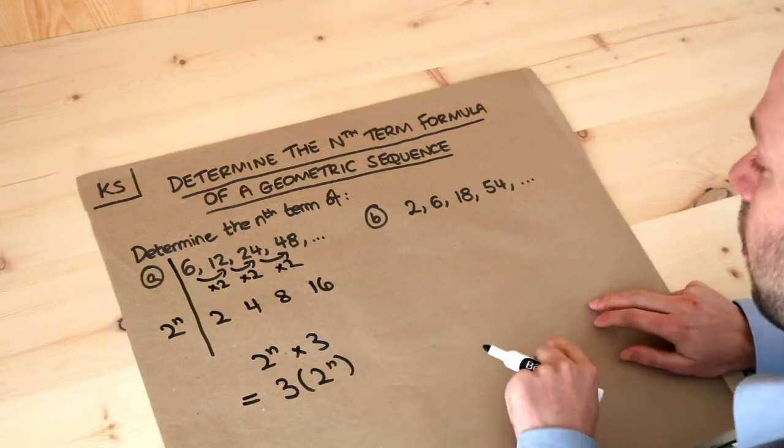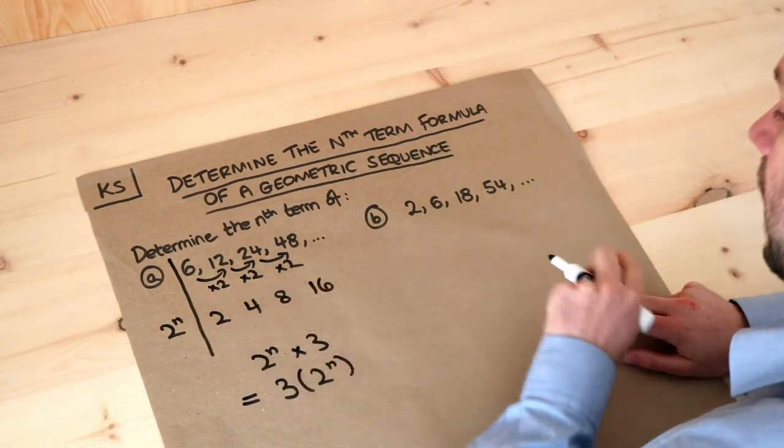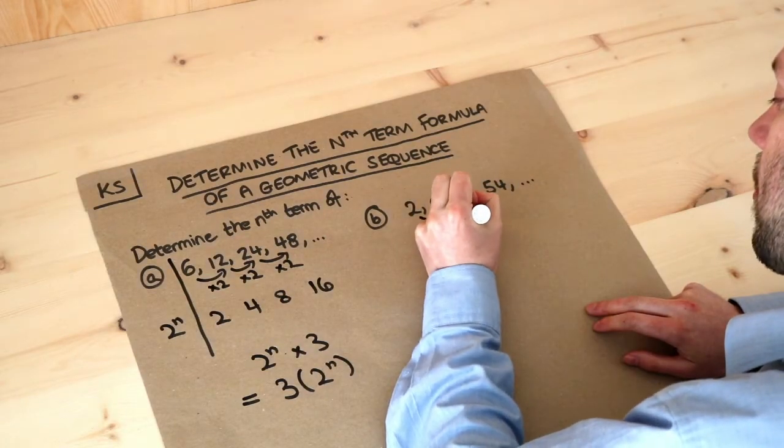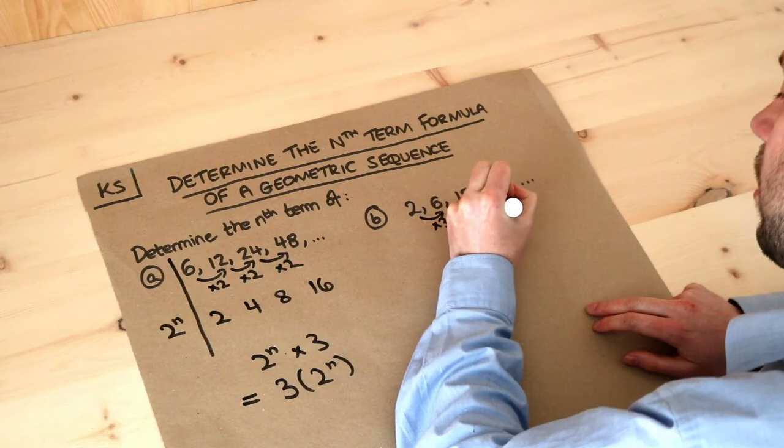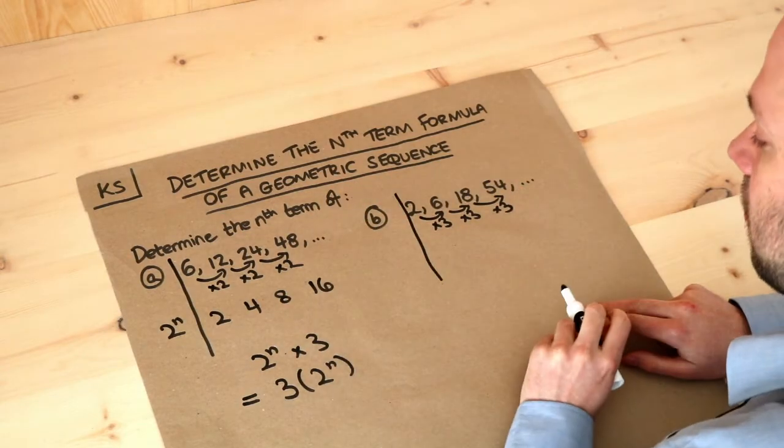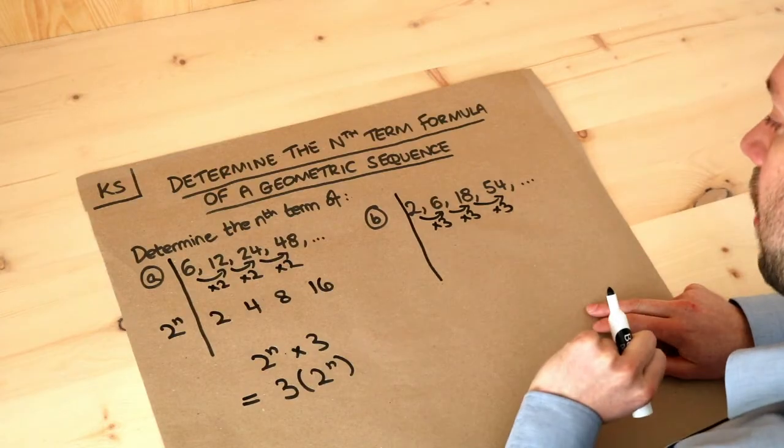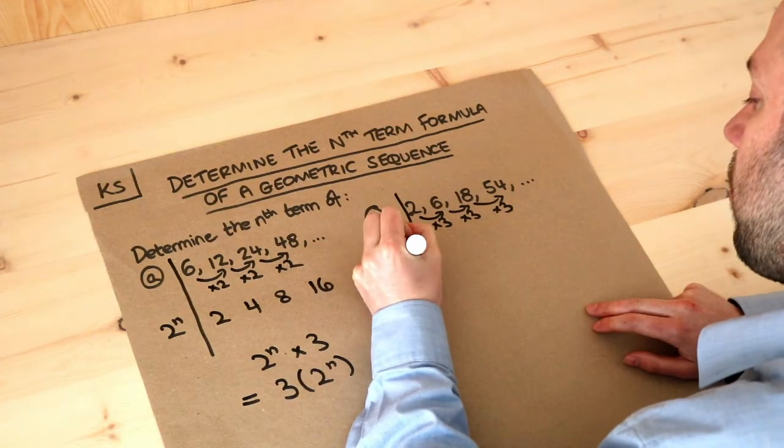What about the second one? Again, we identify the number that we're multiplying each time. These are getting 3 times bigger each time, so I'll put a line here to make a table. If we're multiplying by 3 each time, I'm going to start my formula with 3 to the power of n.